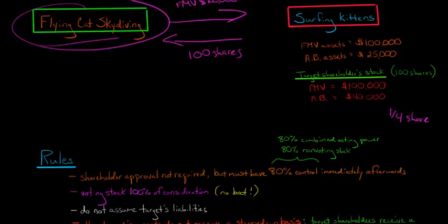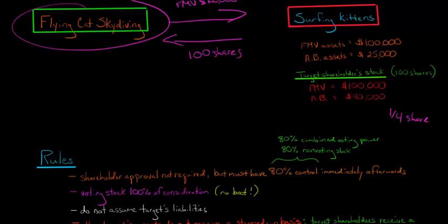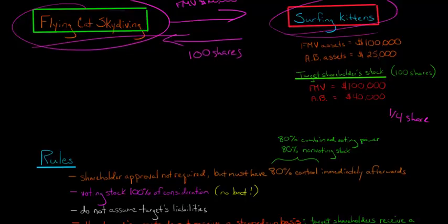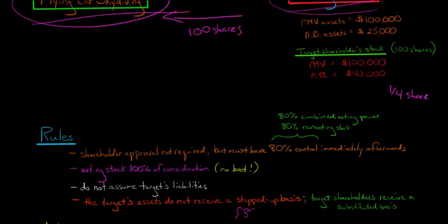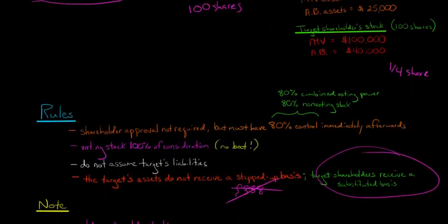One nice thing is that the purchasing corporation — Flying Cat Skydiving — is not going to assume any of the target's liabilities. In a type B, the purchasing corporation continues to operate the target as a subsidiary, so controlling Surfing Kittens as a subsidiary does not mean Flying Cat automatically takes on its liabilities. Any liabilities that Surfing Kittens has continue to be the liabilities of Surfing Kittens. You're also not going to receive any stepped-up basis, because no tax is being paid. Additionally, a Section 338 election to get a stepped-up basis is not available with a type B. The target shareholders receive a substituted basis, and none of the assets get stepped up.